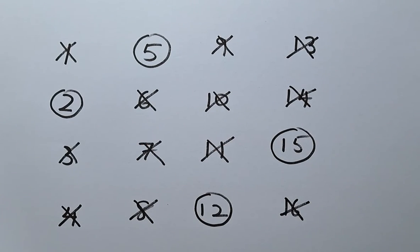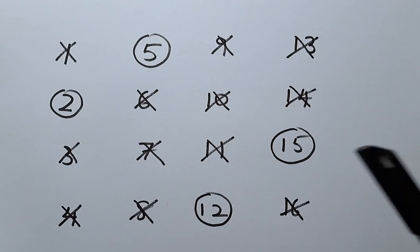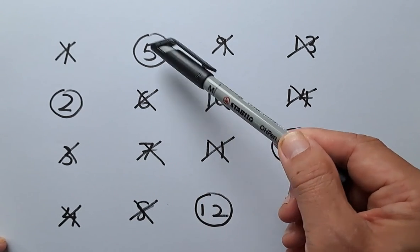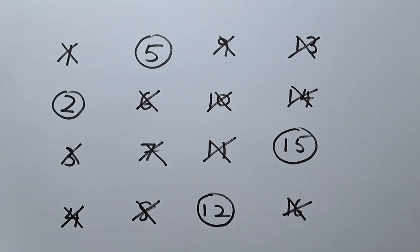So now we have 4 numbers and if you add them up, it's going to be the same every time. It's going to add up to 34. So in the calculator, 2 plus 5 is 7, 7 plus 12 is 19, 19 plus 15 is 34.